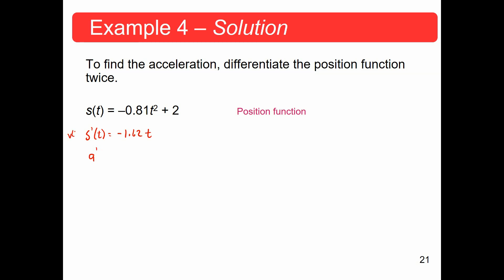Acceleration is equal to the first derivative of velocity or the second derivative of position, which are both the same thing. These are not two different things. The first derivative of velocity, second derivative of position, still going to get you to a. So, basically, we're just taking the derivative of this, which is negative 1.62.